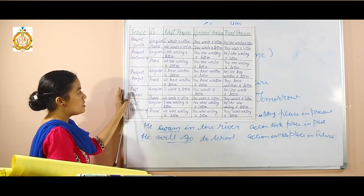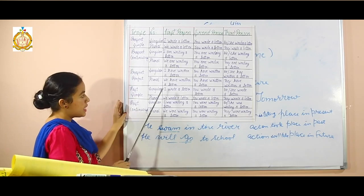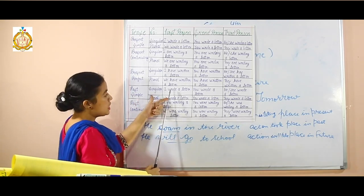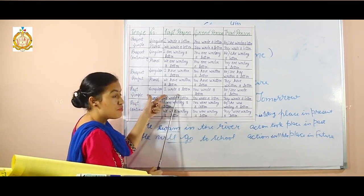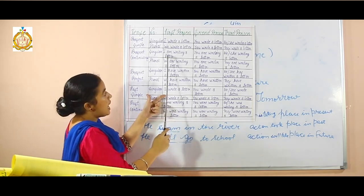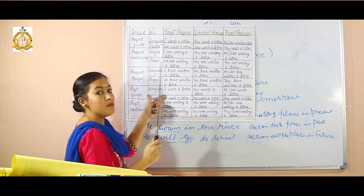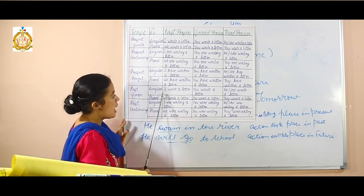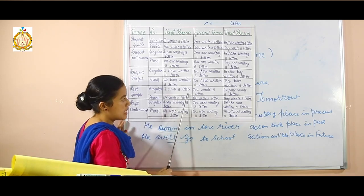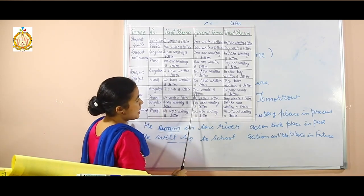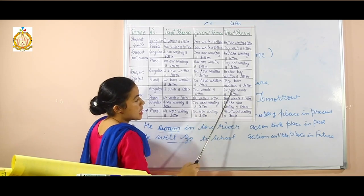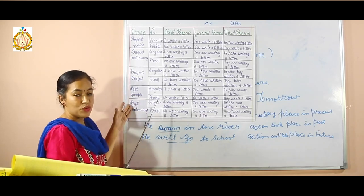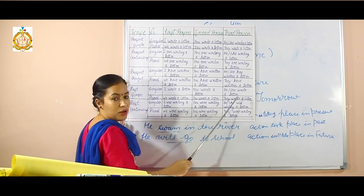Now comes simple past tense. In simple past tense, we use the second form of the verb. For example: 'I wrote a letter.' In second person — 'You wrote a letter.' In third person — 'She wrote a letter.' So in simple past tense, we will use the second form of the verb.